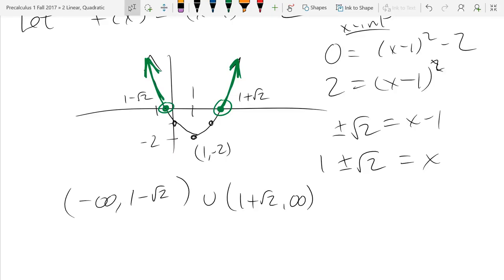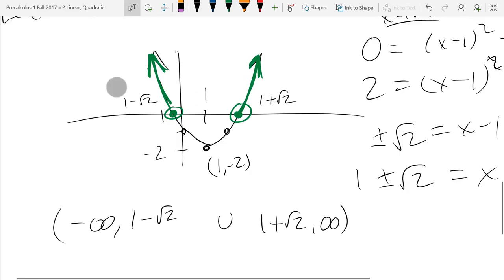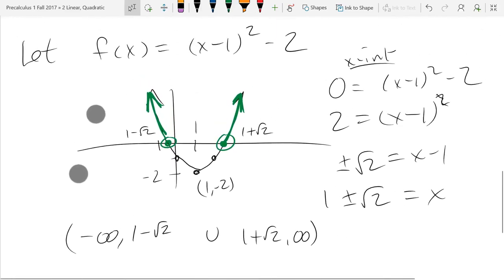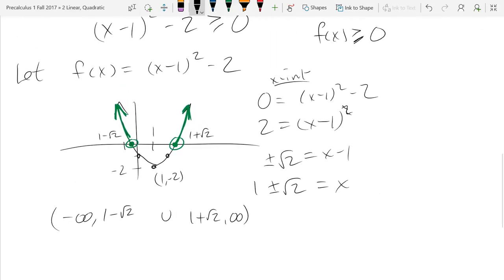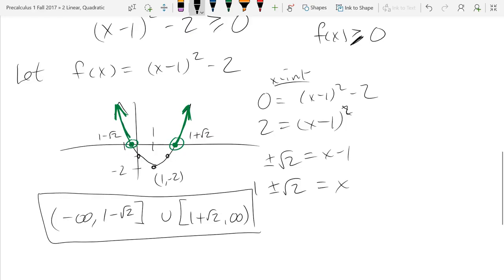Now I need to be very careful about my end values. Am I allowed to include the x-intercepts? Yes, because it was greater than or equal to, so that 'equal to' means I include the two x-intercepts right there. This will be the x values where this is above the x-axis.